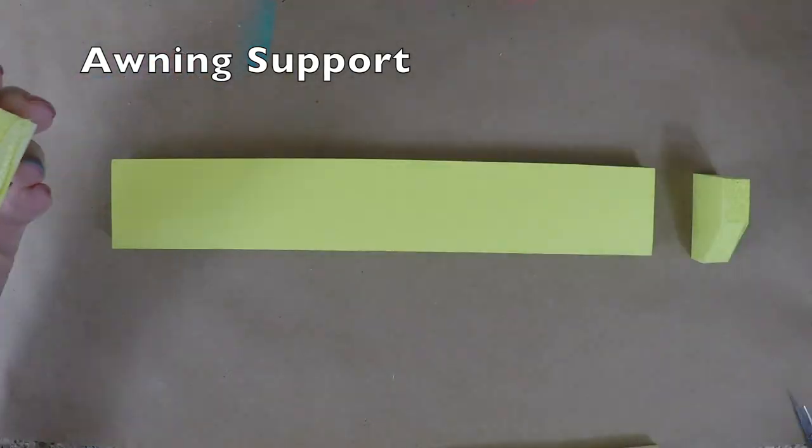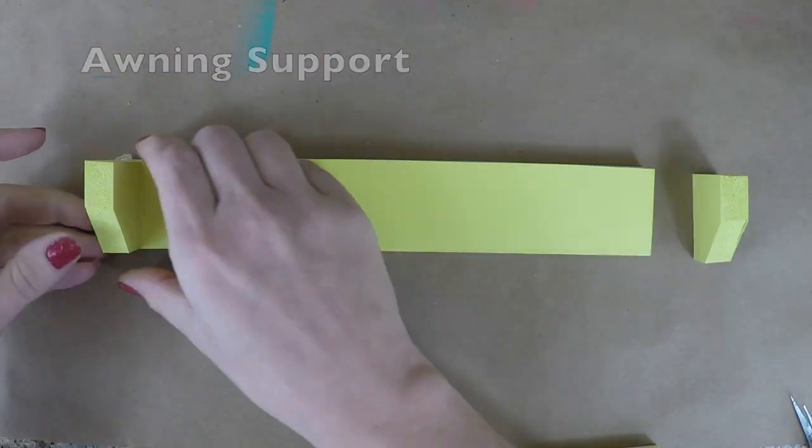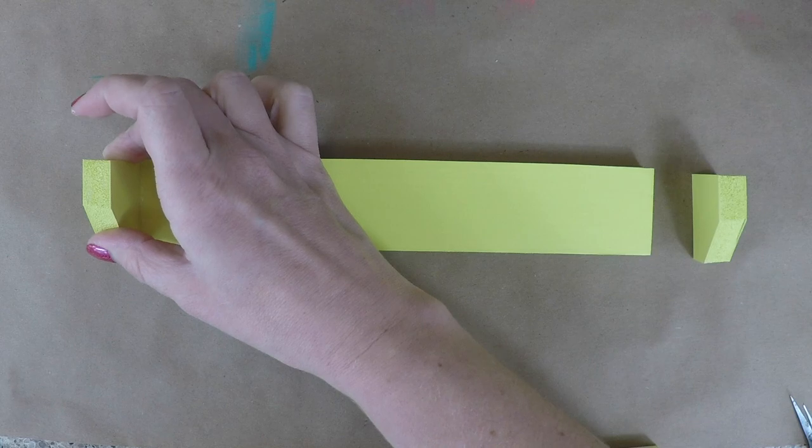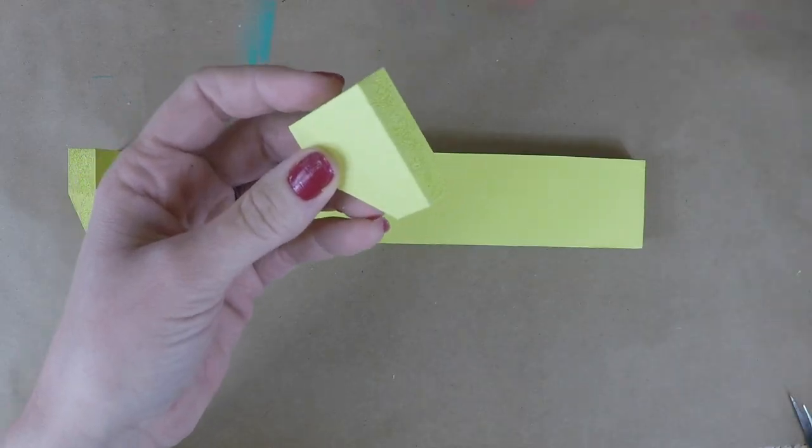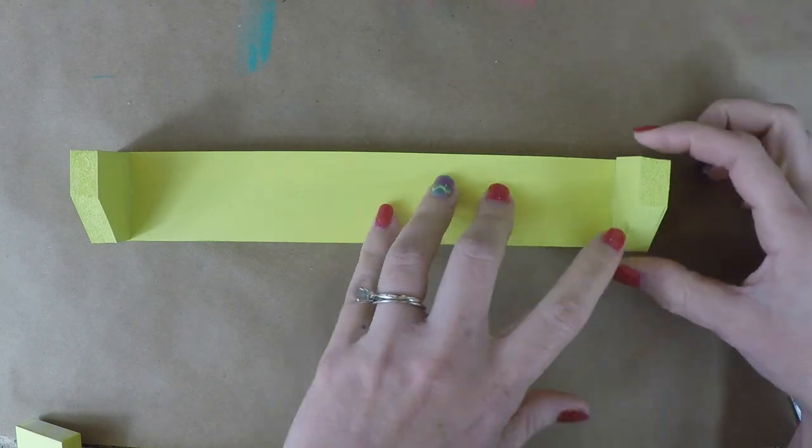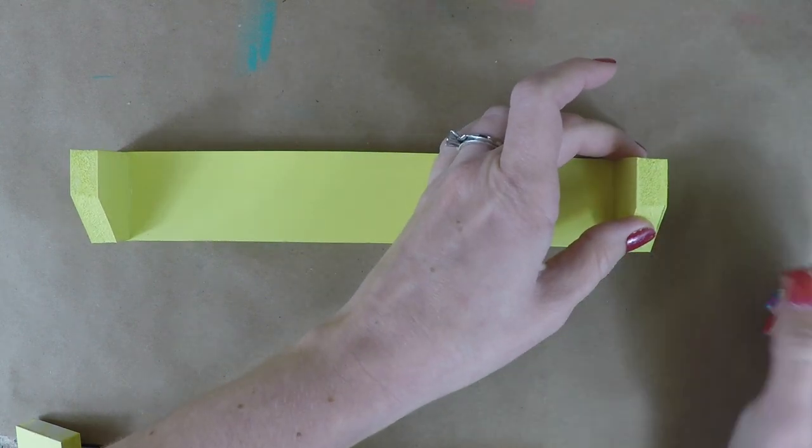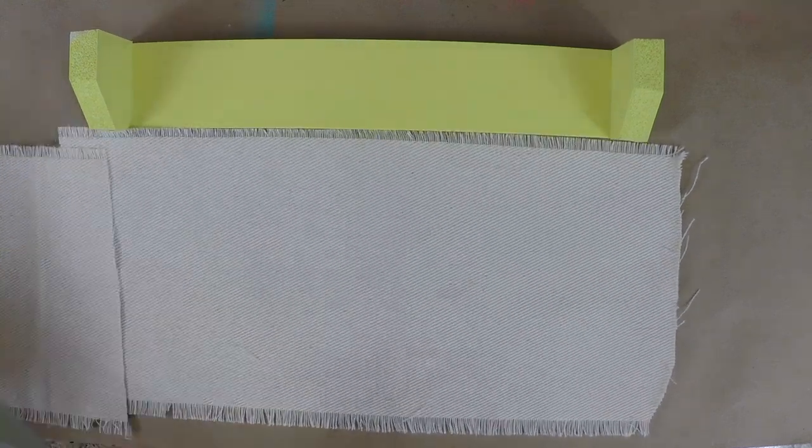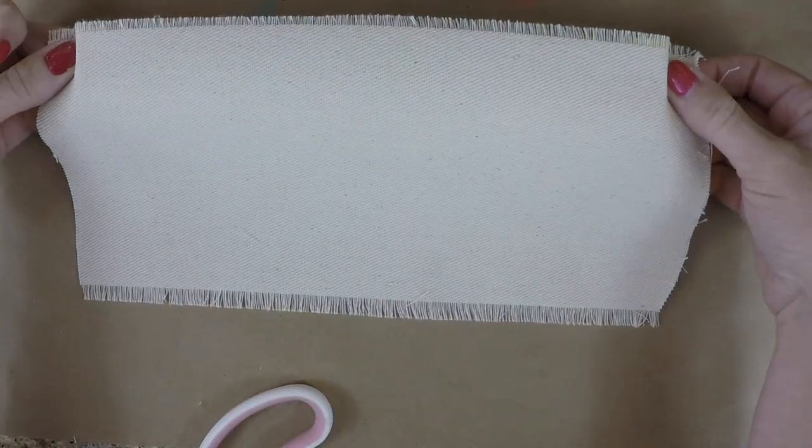For the awning support, lay your pieces out like this and attach it with the hot glue. Now that your awning supports are complete, you can measure how long you need your canvas to be.